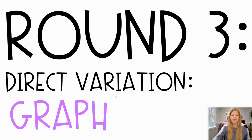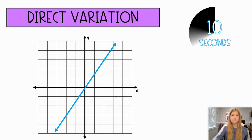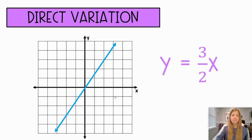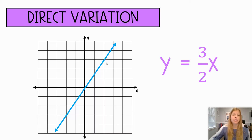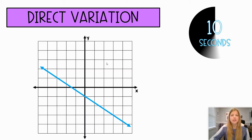Round three: figuring out the direct variation from the graph. Really all we're doing is figuring out — does it go through the origin? If it is a direct variation, and if it doesn't go through the origin, then it's not. This first one most certainly is a direct variation — it does go through the origin, and the constant of variation is three over two because from the origin it's going up three and to the right two.